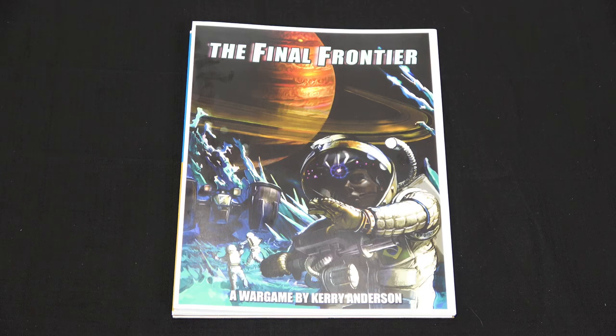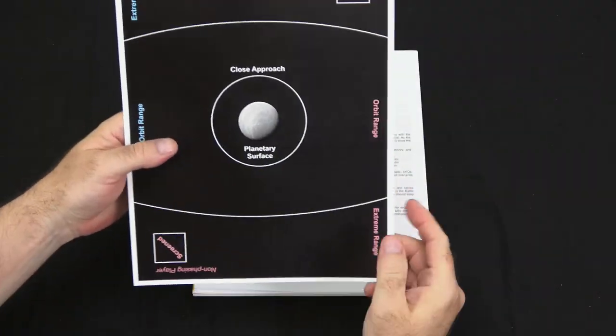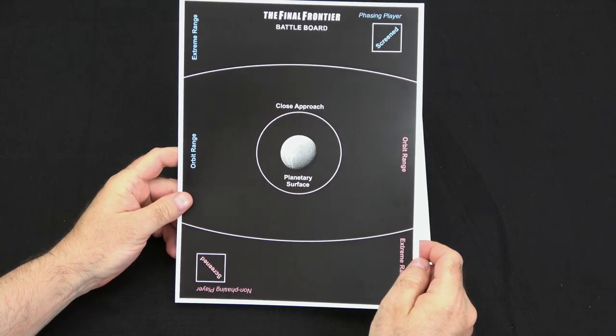This is a Ziploc game, so there's no back-of-the-box to read, so we're going to dig right into the components and see what you have to look forward to. Now we see the cover sheet first, and on the back of the cover sheet we have the battle board that you'll be using during the game.